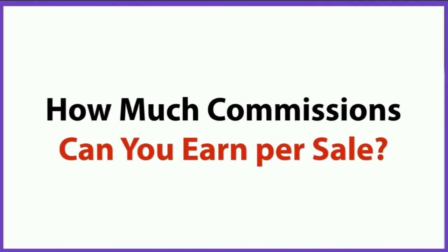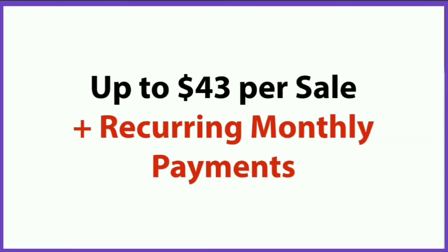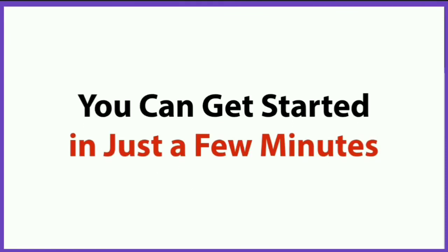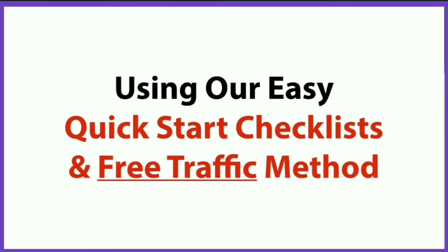And how much commissions can you earn per sale? Up to $43 per sale, plus recurring monthly payments. There are only three steps to getting results with LogoDoll. Step one is simply download all 200 pro logos. Step two is upload the ready-made website kit. Step three is earn affiliate commissions. And you can get started in just a few minutes using our easy quick start checklists and instant free traffic method.